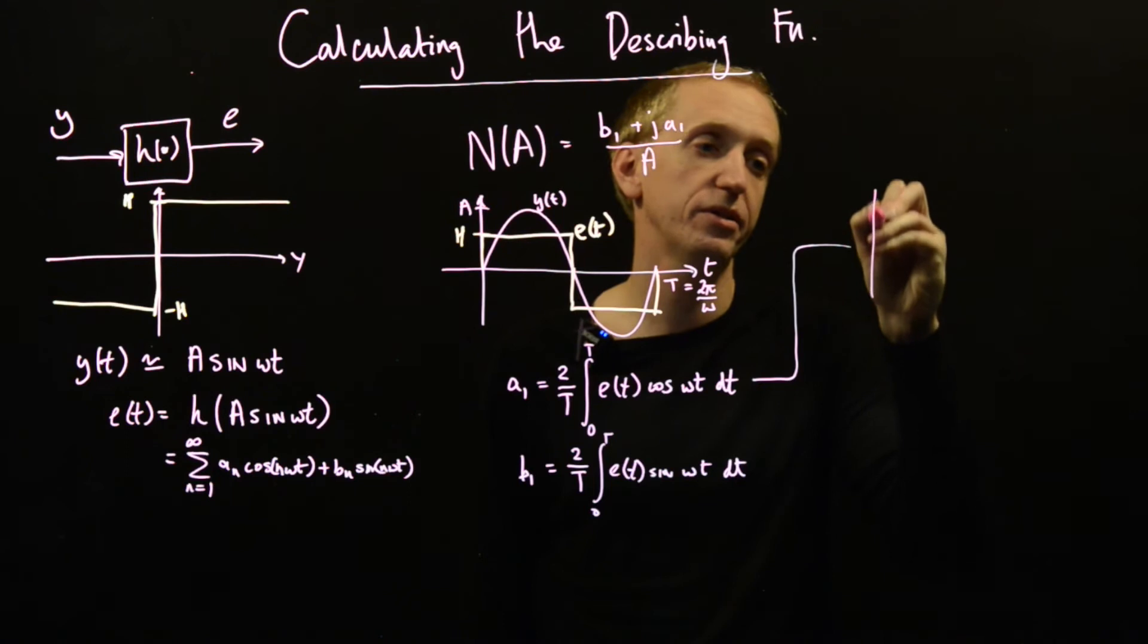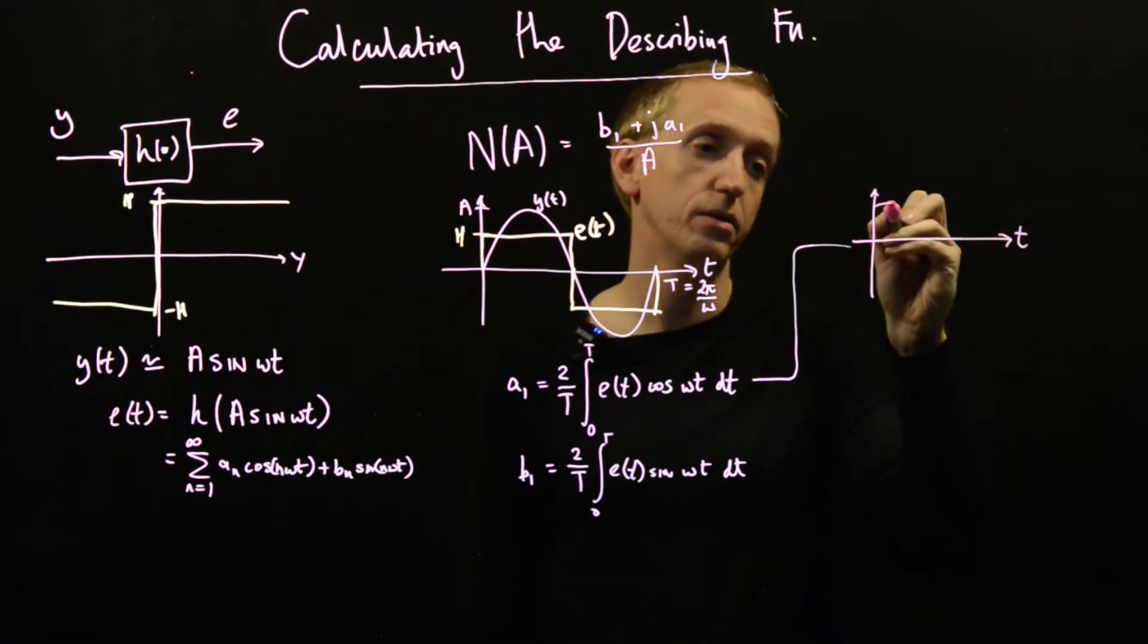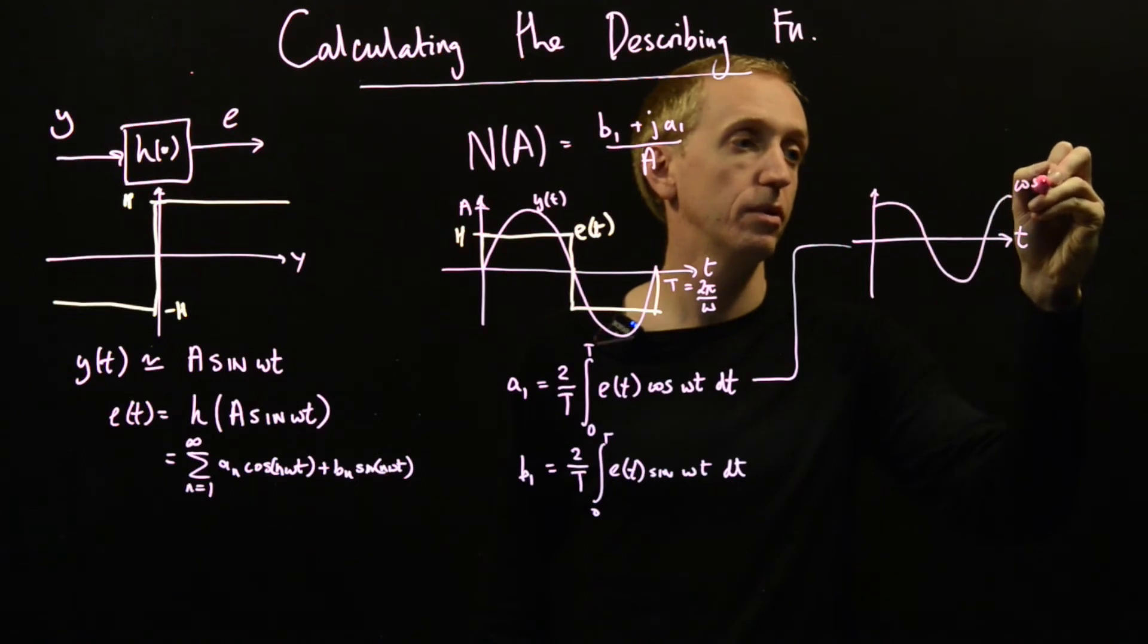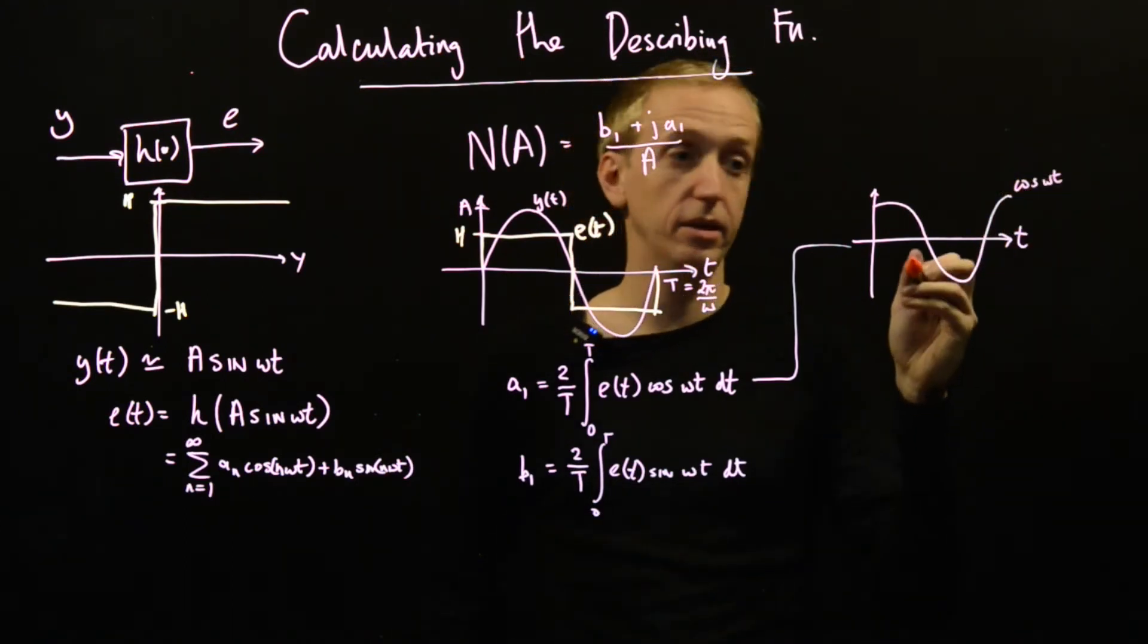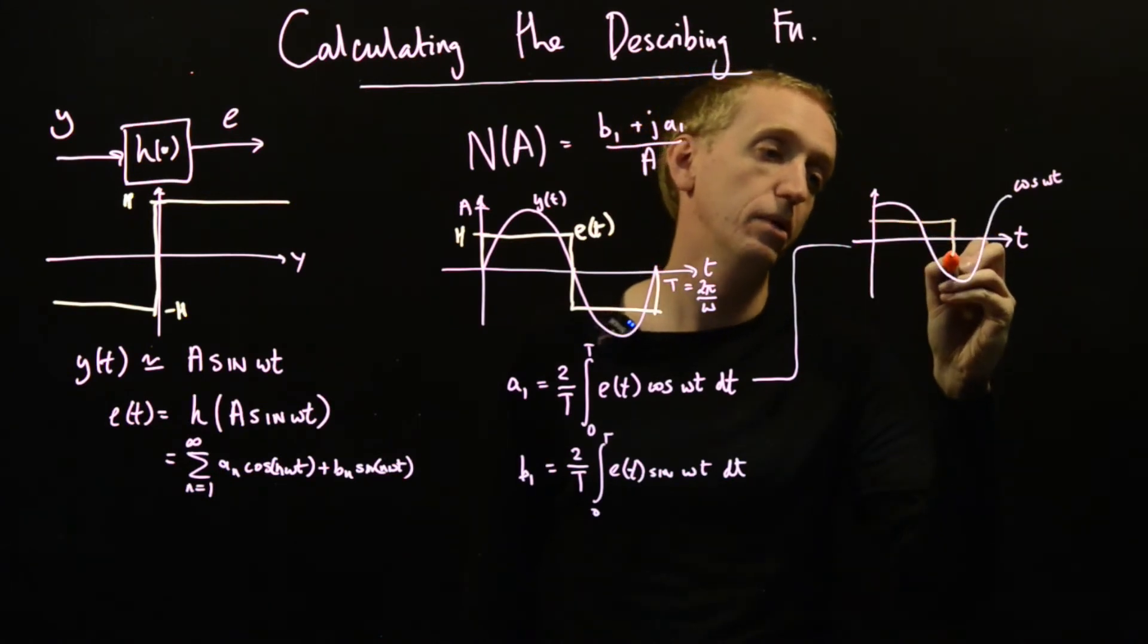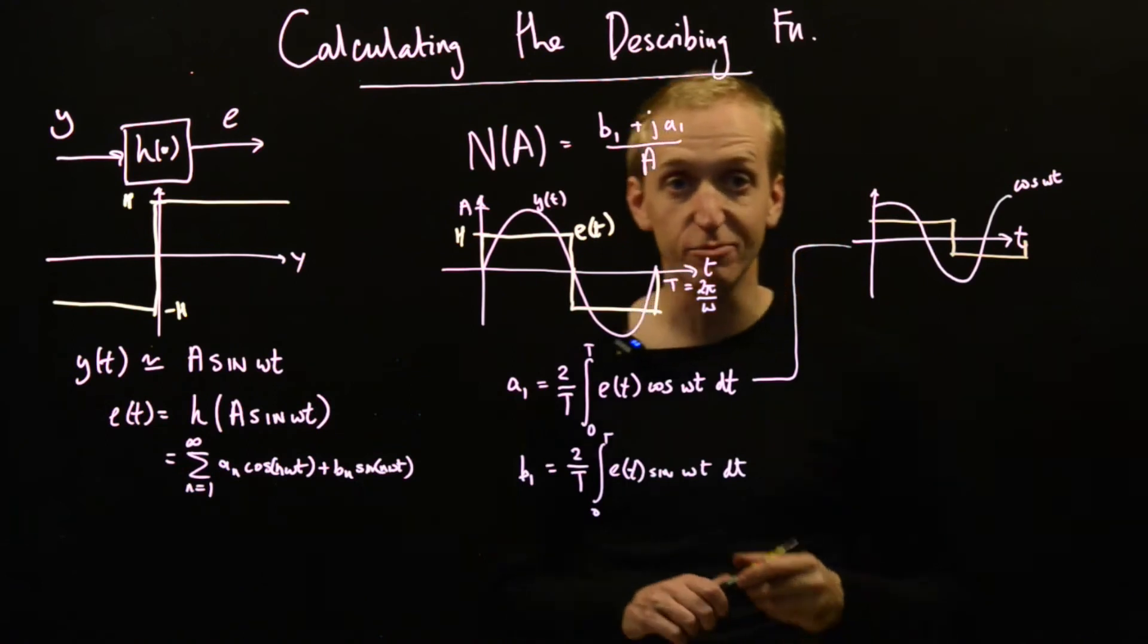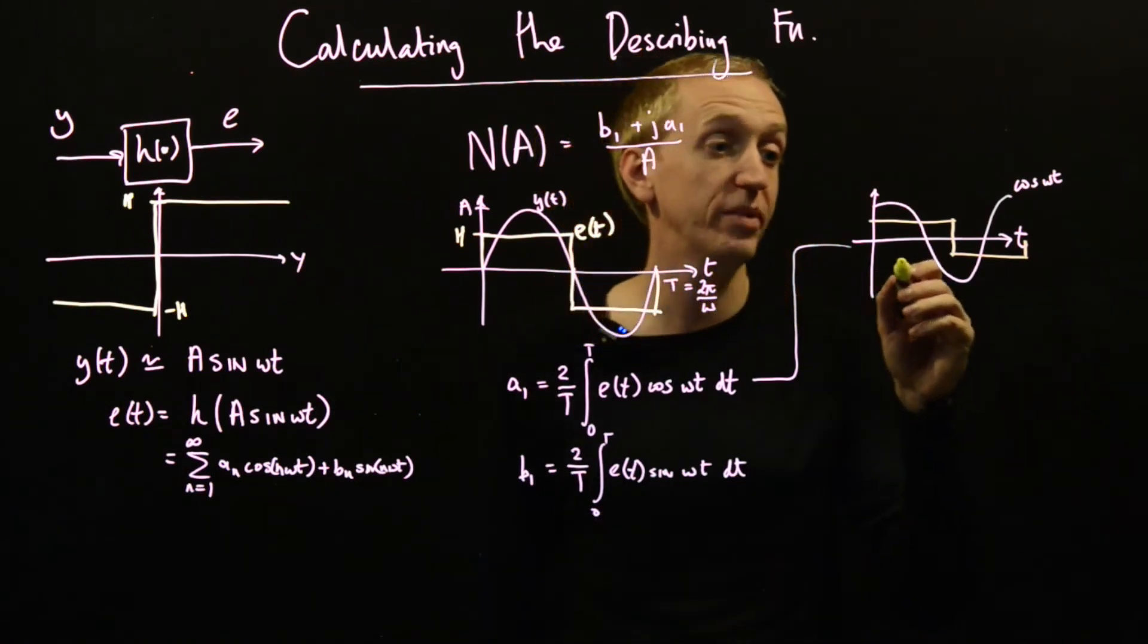So in this first integral, well, here we have time. This is cos(ωt). So that's cos(ωt). This is e(t). So what is the product? Well, actually, very excitingly, I've got some new colors. So we can draw on the product in a different color.